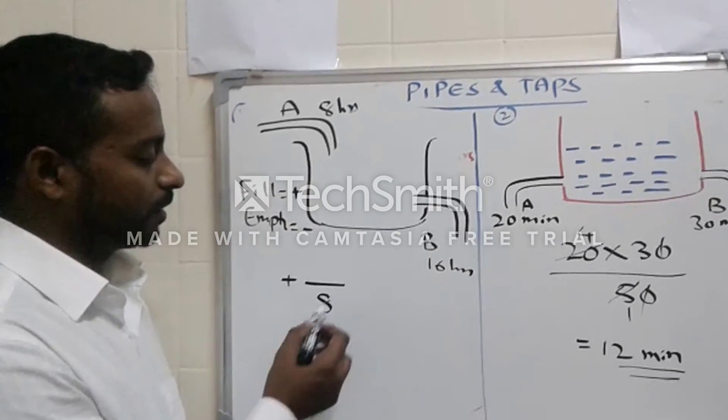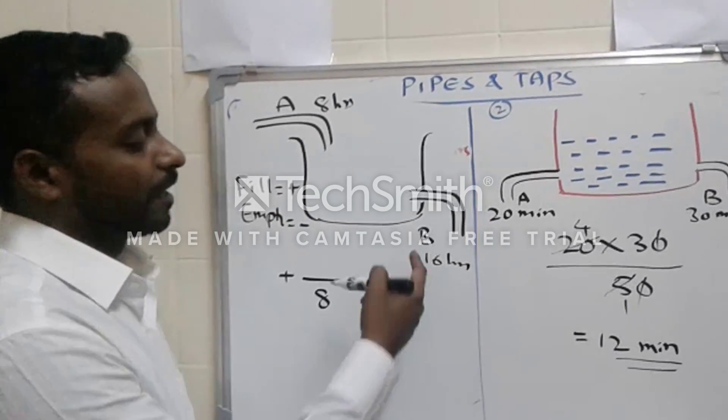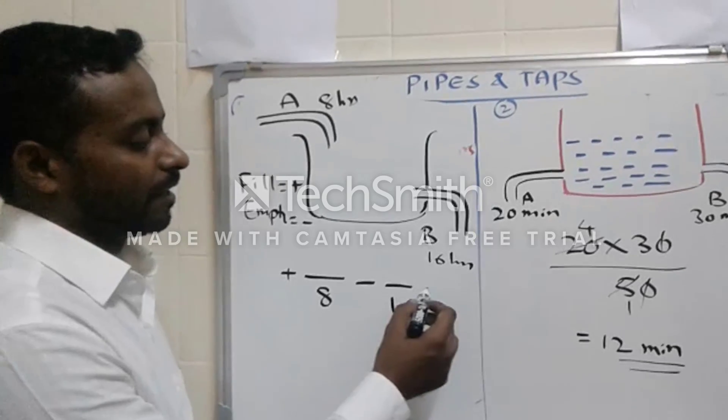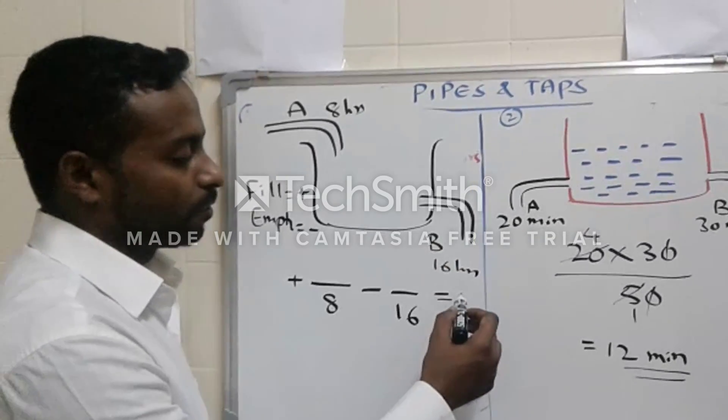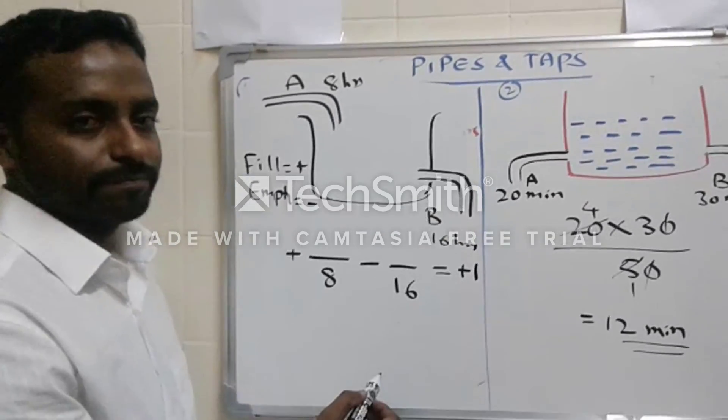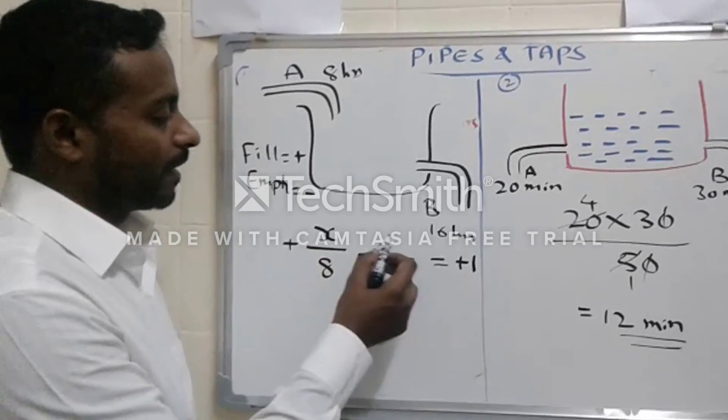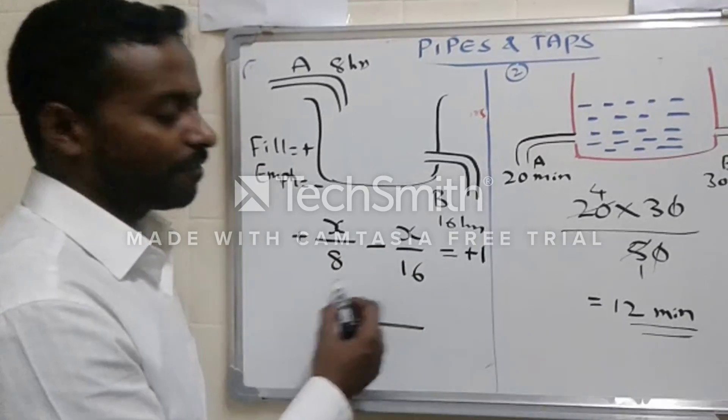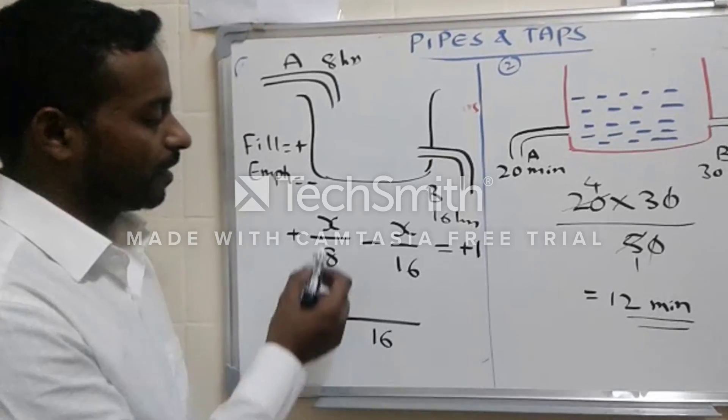Negative we will take for emptying, 16 equals to how much time. So we will write plus 1. Take the quantity as X. Now LCM of 8 and 16 will give me 16.